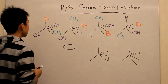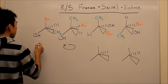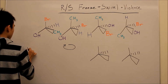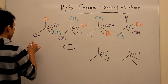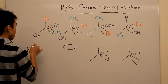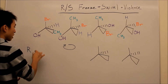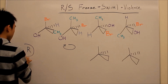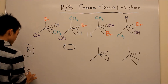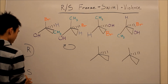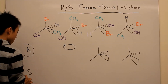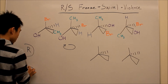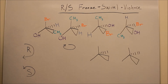So first of all, R just means that the priority groups go clockwise, and S just means that the priority groups from lowest to highest go counterclockwise.